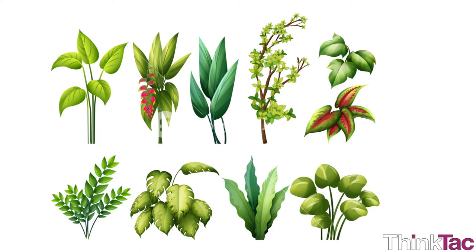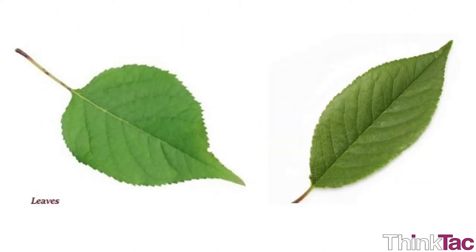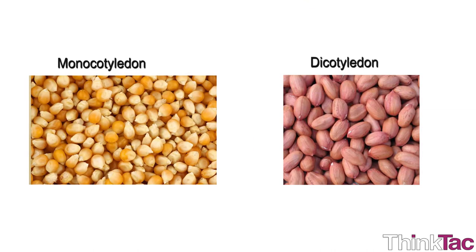Different plants have a different pattern of veins on their leaves. This pattern is known as venation. Different venation is indicative of different types of plants. Studying venation of leaves helps biologists to categorize plants into different types, for example monocotyledonous and dicotyledonous plants — that is plants with seeds of a single cotyledon and two cotyledons respectively. This differentiation is important for evolutionary and many other biological studies.